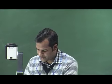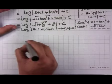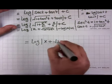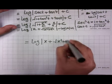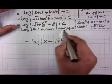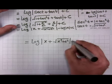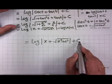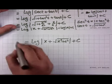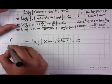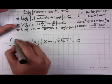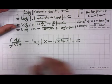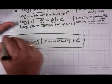Since log|a| is a constant, combining it with C and renaming it as a new constant C, the final formula is: ∫dx/√(x²+a²) = log|x+√(x²+a²)| + C.